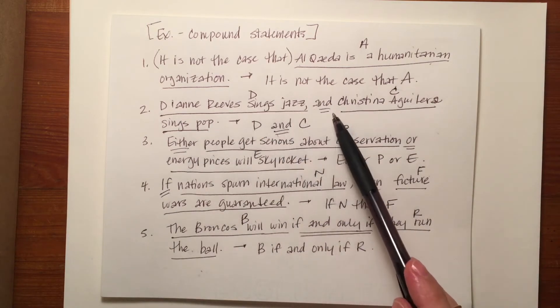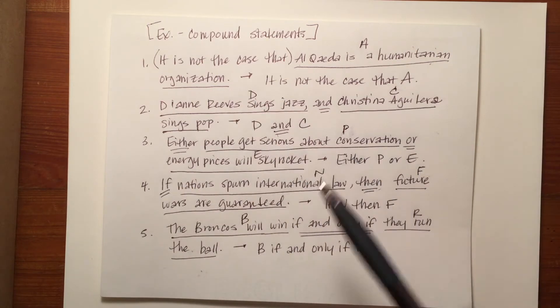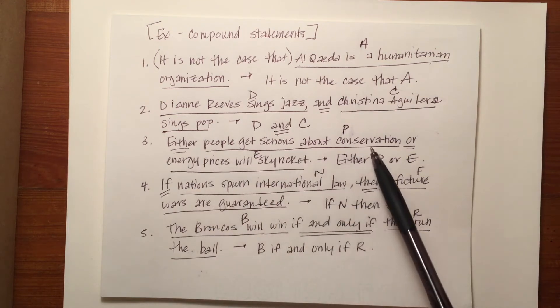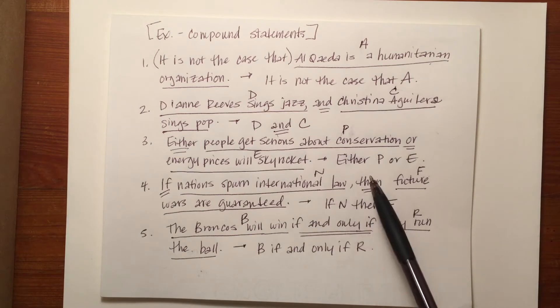'Diane Reeves sings jazz and Christina Aguilera sings pop' was simplified into 'D and C.' In the third example, 'either people get serious about conservation or energy prices will skyrocket' became 'either P or E.'